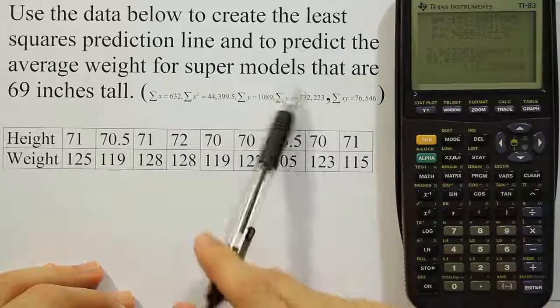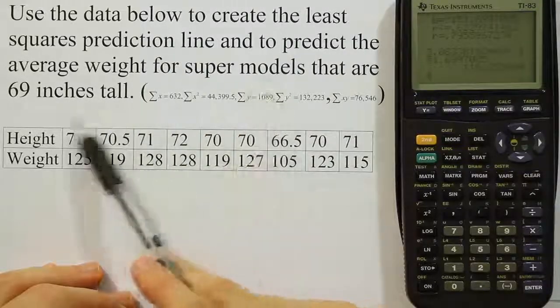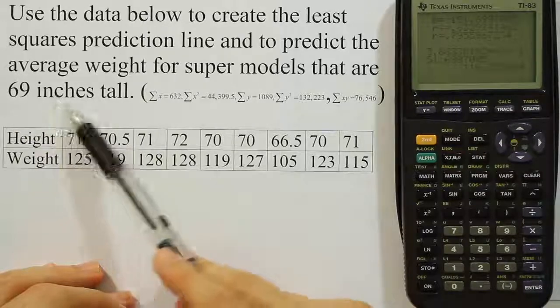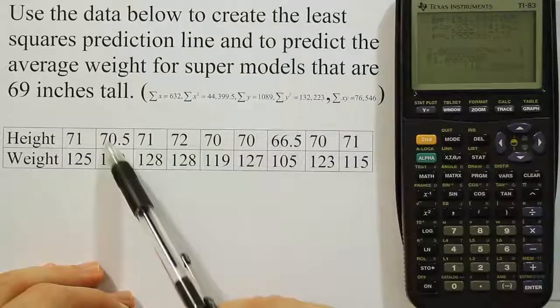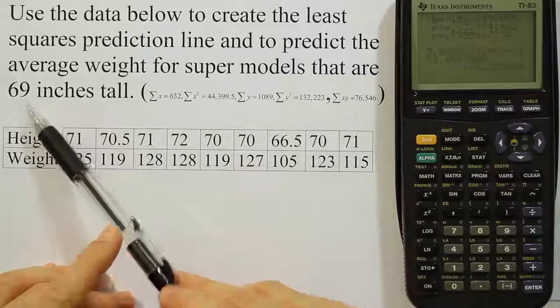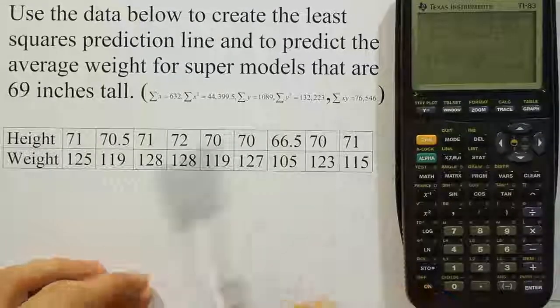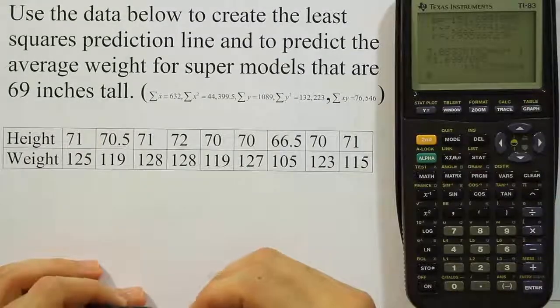If they're not supermodels, they're probably considerably heavier than that. But these are for a very specific subculture of the population. So if you're a supermodel and your height is about 5 foot 9, then your average weight is about 116 pounds, which is quite skinny, actually.